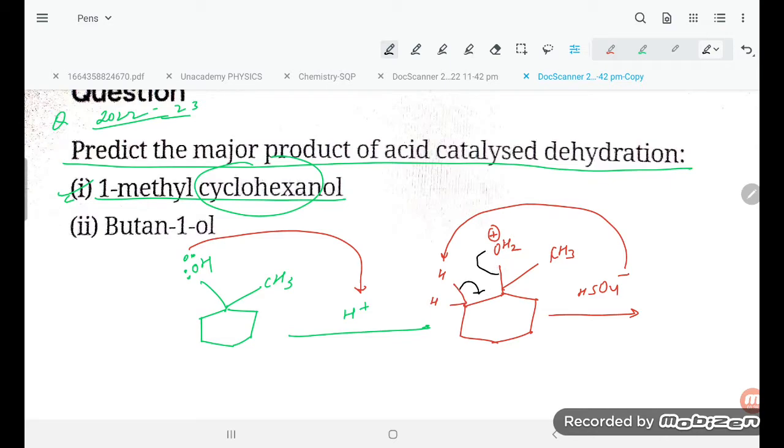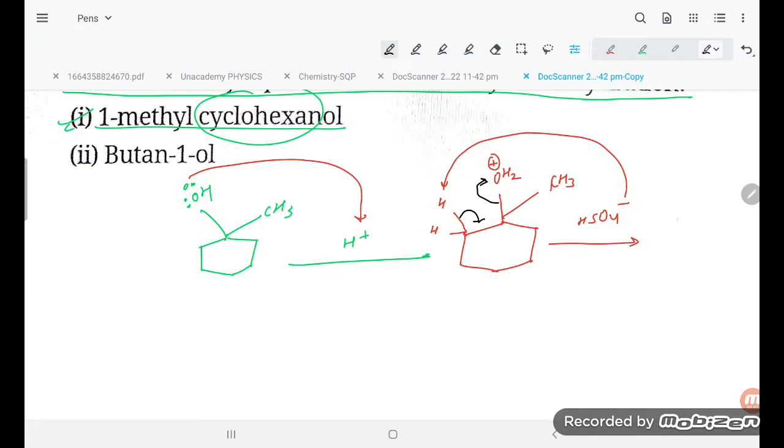And this will be going out. So here you see what is the product - it may be a little bit confusing - but here is the double bond, and here is the CH3 group. This is the major product.